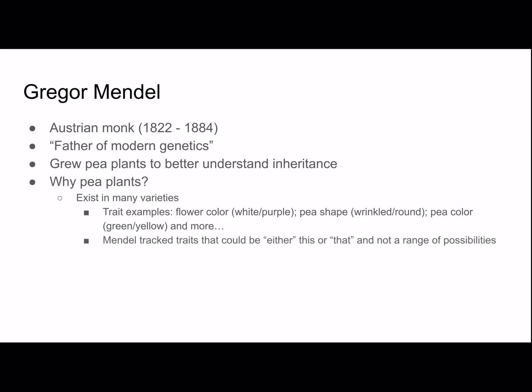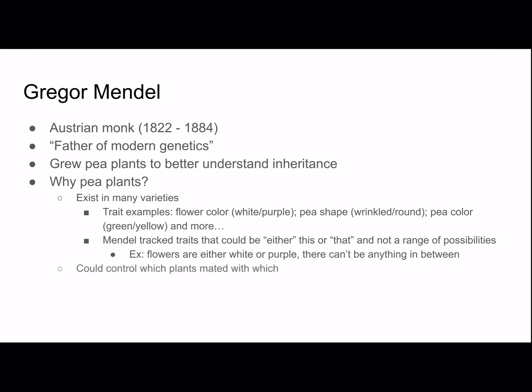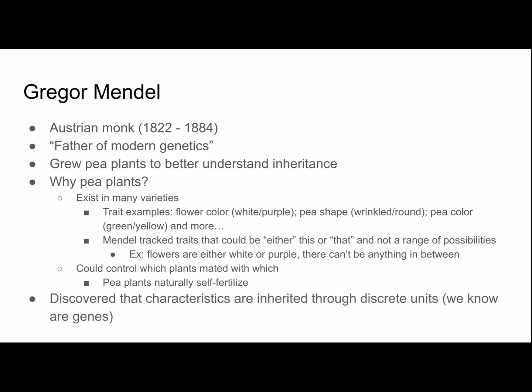Mendel tracked traits that could be either this or that, and not a range of possibilities. For example, flowers are either white or purple — they can't be anything in between. This was really important for him to discover all the patterns of inheritance that he did. He could also control which plants mated with which because pea plants naturally self-fertilize. He discovered that characteristics are inherited through discrete units — we now know those are genes — but keep in mind he lived a while ago, and at the time they didn't know about DNA and genes.